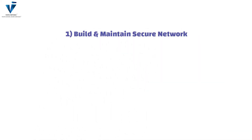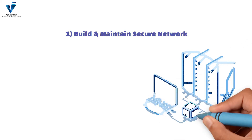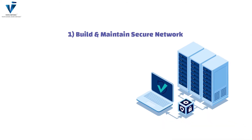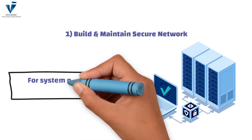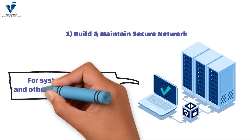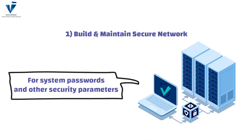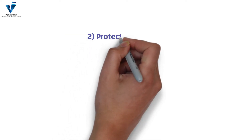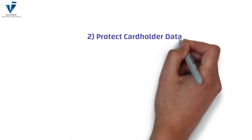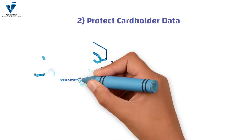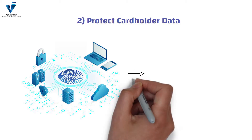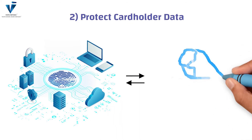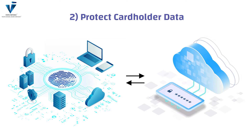The first requirement is to build and maintain a secure network. This includes installing and maintaining a firewall configuration to protect cardholder data, and not using vendor-supplied defaults for system passwords and other security parameters. The second requirement is to protect cardholder data. This includes protecting stored cardholder data within the environment and encrypting the transmission of cardholder data across open and public networks.